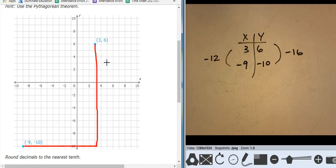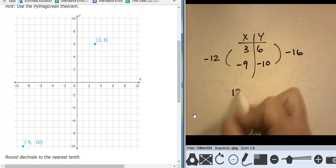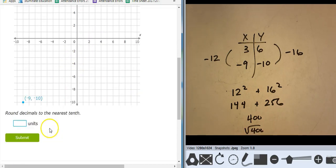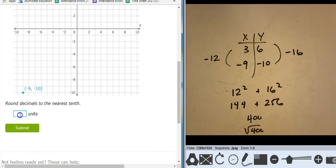But notice, I didn't have to do the triangle. I can just make this kind of table and find the changes. So this is going to be 12 squared plus 16 squared. So I'm looking at 144 plus 256. That's going to be 400. Square root of 400 is 20.